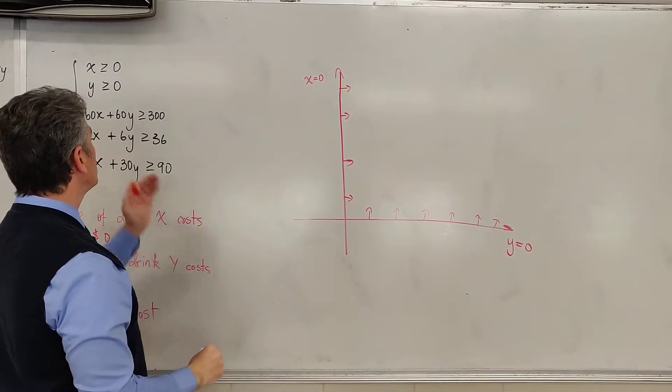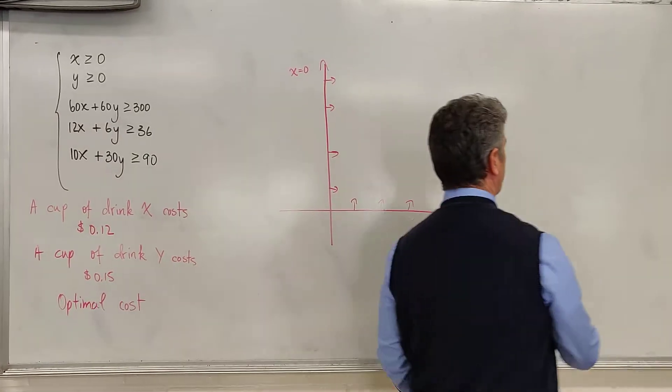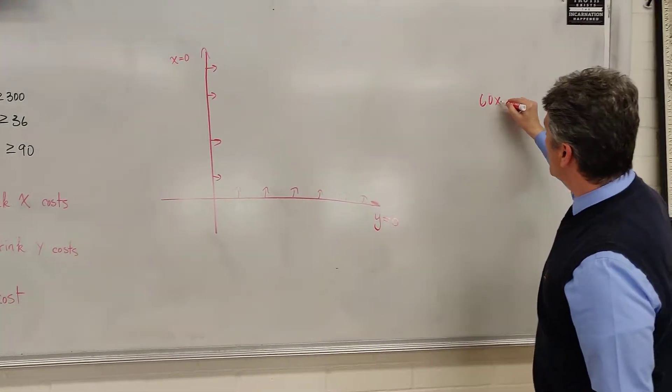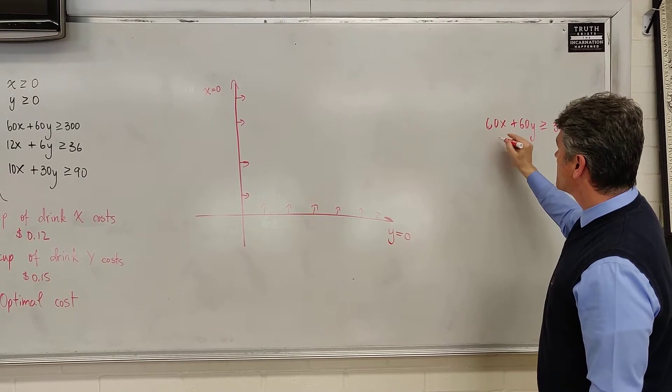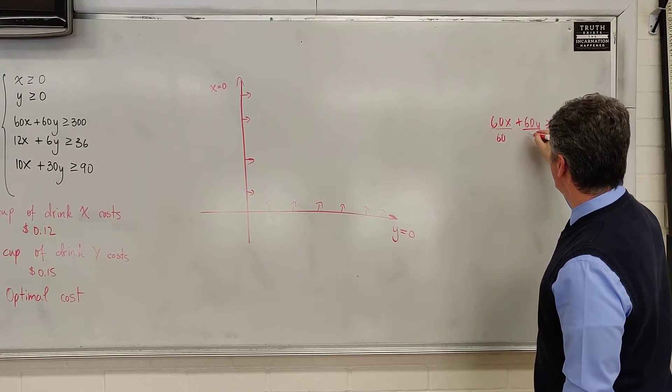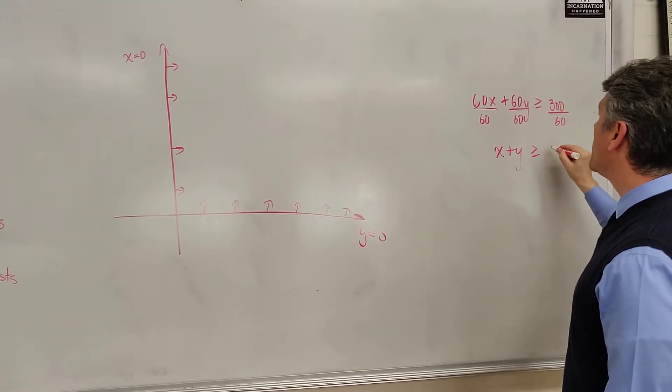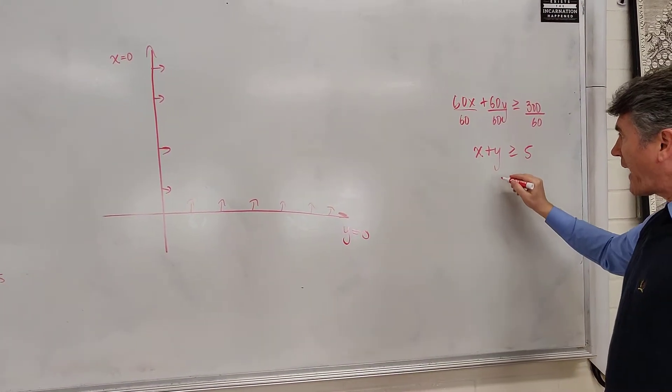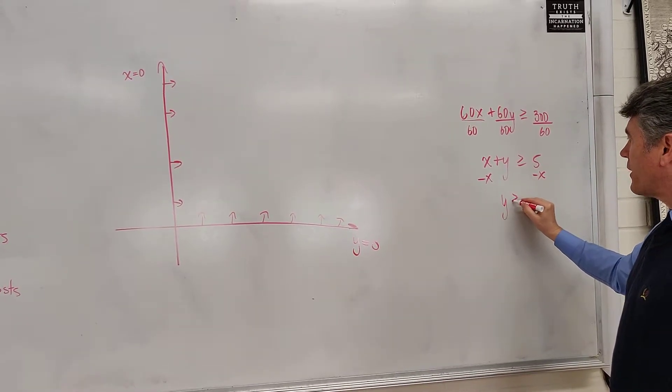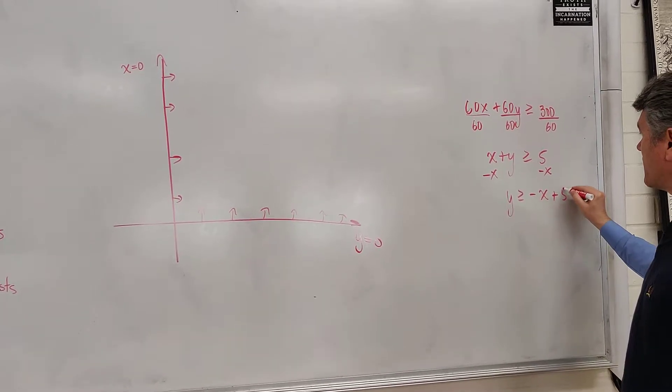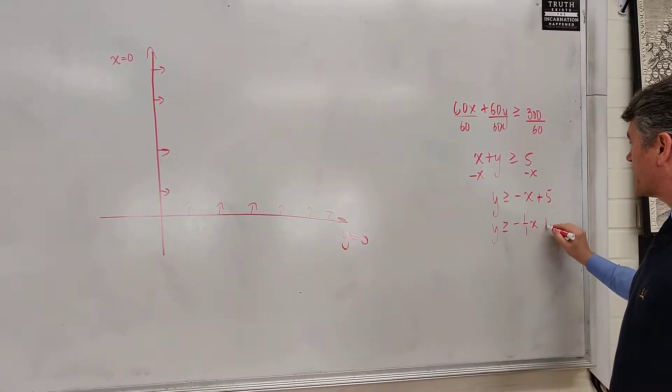Let's continue with our next equation. 60x plus 60y is greater than or equal to 300. First, we're going to divide everything by 60, make our life a lot easier. And we have x plus y is greater than or equal to 5. Subtract x from both sides. And we have y is greater than or equal to the opposite of x plus 5. y is greater than or equal to negative 1 over 1x plus 5.